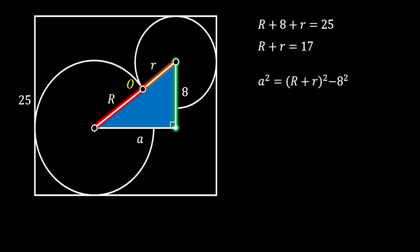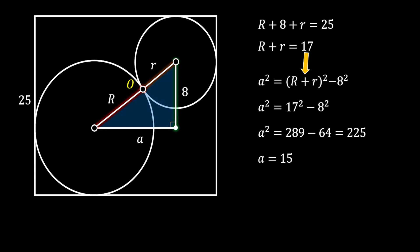Now, we know that the sum of our radii is equal to 17, so we will just substitute this value in, we will put everything to the square, and we will get that a squared is equal to 225, which means that the base of this right triangle is equal to 15.